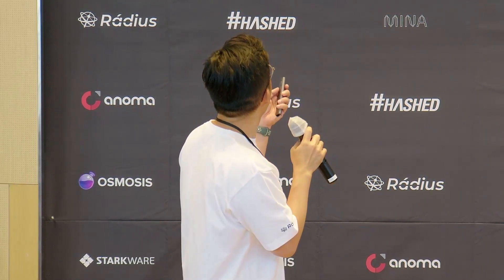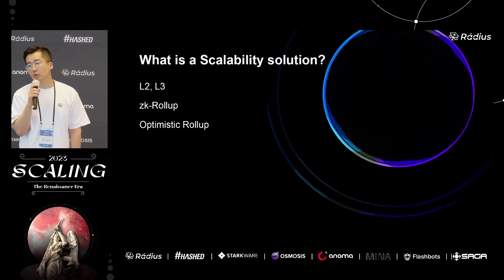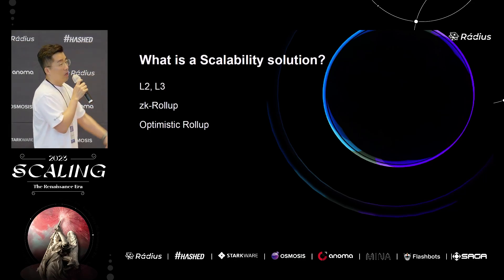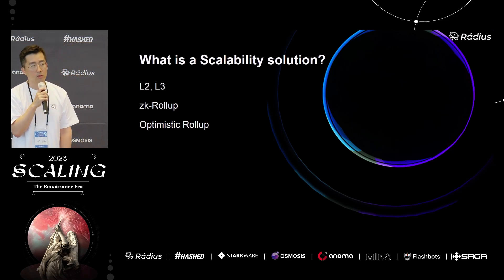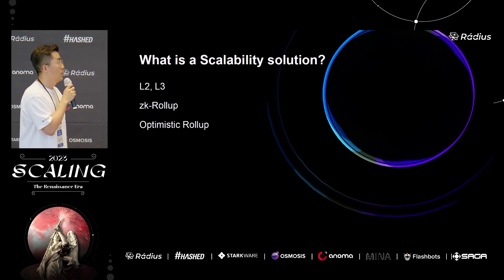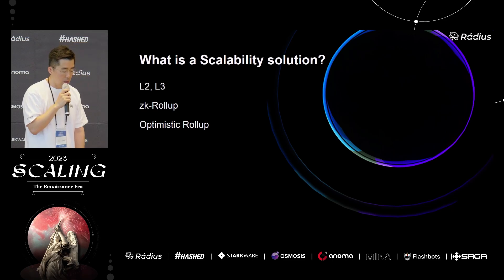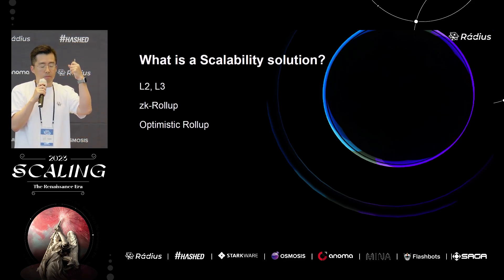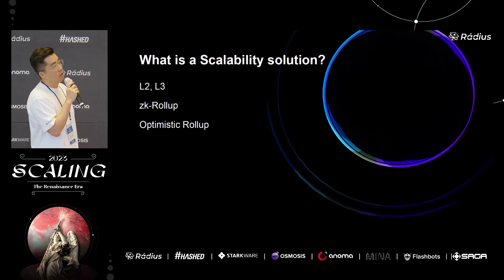Radius is building a sequencing layer for rollups. There are a lot of projects working on scaling solutions, and I really admire the hard work they've been doing — layer three, layer two, layer one, optimistic rollups, ZK rollups. I think they all make sense, and our community will choose which one is best. Radius believes in the modular thesis and takes rollups into Ethereum really seriously.